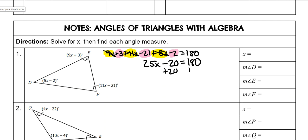Add 20 to both sides. And 25x is equal to 200. Divide both sides by 25. And x is 8.